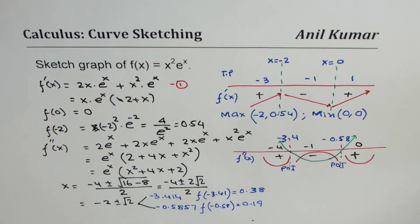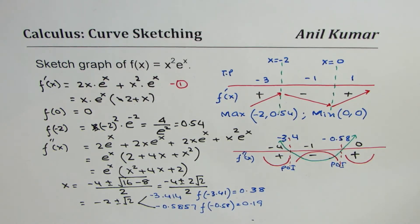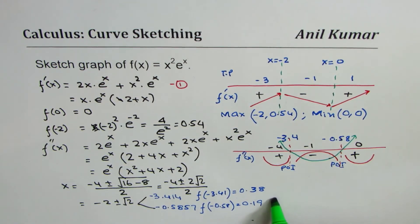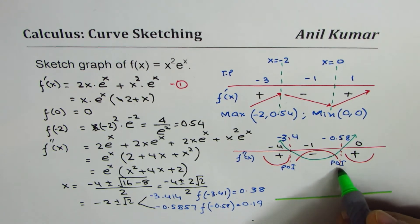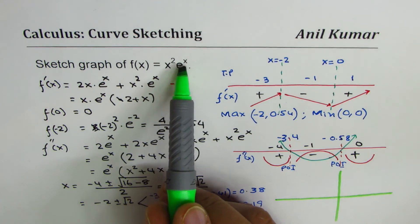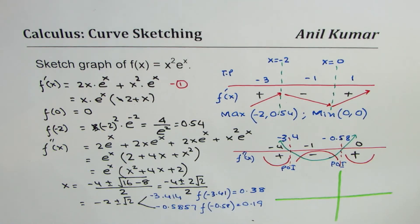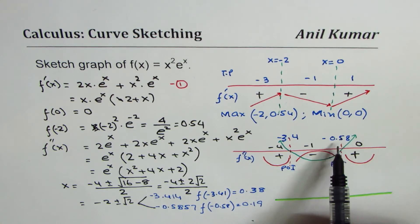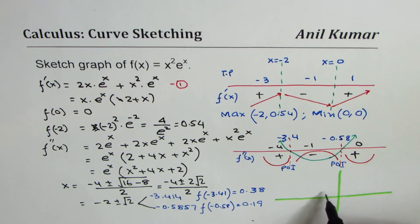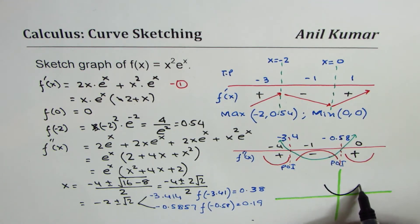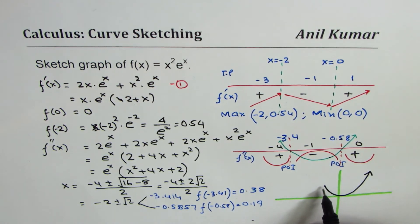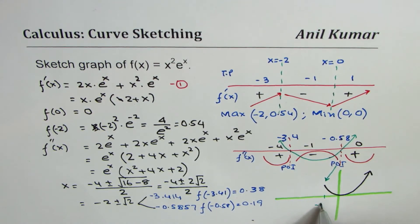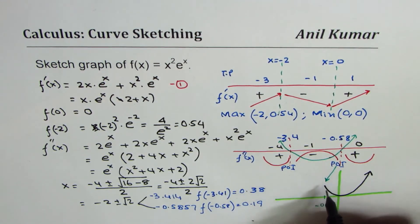So we have two points of inflection, and based on this information we can plot the curve. The function is always positive since x² and eˣ are both always positive, making (0, 0) the absolute minimum. The concavity is: concave up, then concave down, then concave up again. The point of inflection at approximately −0.5 is where the concavity changes the first time.